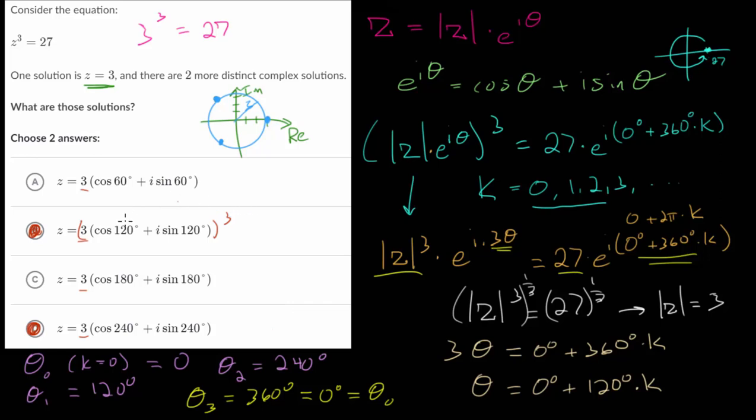Since we know that raising a complex number to an exponent, we multiply the magnitude by itself that many times, and we multiply the angle by whatever the exponent is, so 3 times by the angle. The magnitude is multiplied by itself 3 times, and the angle is added to itself 3 times. So, if you want, you can always check these just to confirm that when you do raise B and D to the third power, you get back 27.